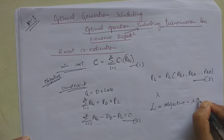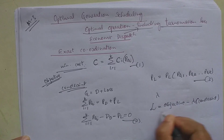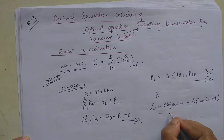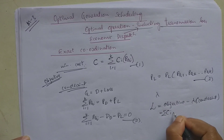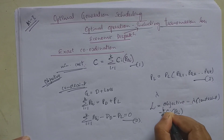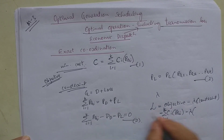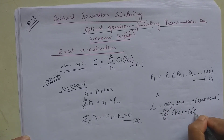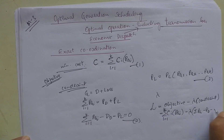The Lagrangian function is given by: objective minus lambda times constraint. The objective is to minimize the cost function, so it is: summation of C_i(P_Gi) for i = 1 to k, minus lambda times the constraint: summation of P_Gi minus P_D minus P_L — take this as equation 4.